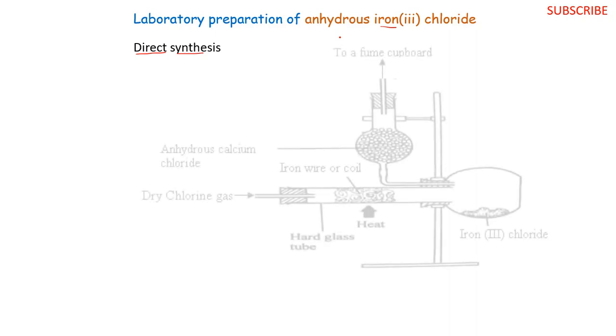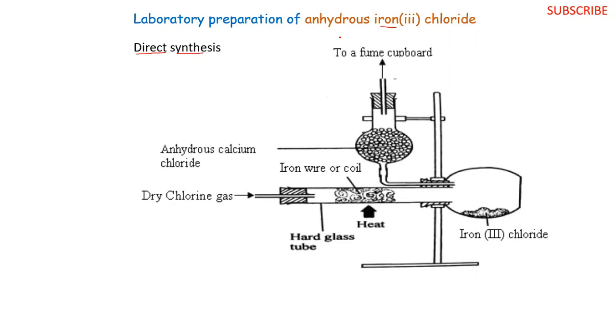The following setup is what we are going to use or it's what is actually used if at all you were to prepare this sample in the lab. When you look at this setup it appears complex but we shall try to simplify it. First of all we have a glass tube here, a combustion tube. And in this combustion tube we place our iron wire or coil, the one that will react with the chlorine to form iron(III) chloride. We have a combustion tube because it's good at withstanding very high temperatures. Obviously we must have some source of heat below the combustion tube that will help us heat this iron wire.